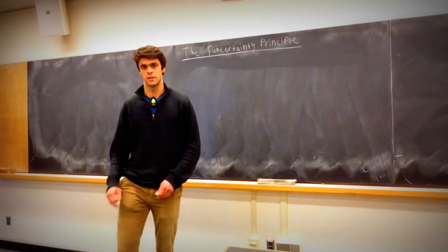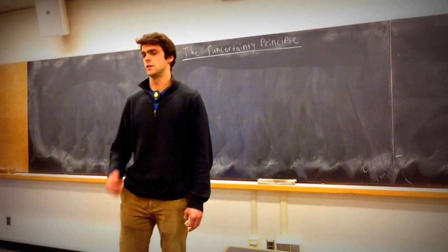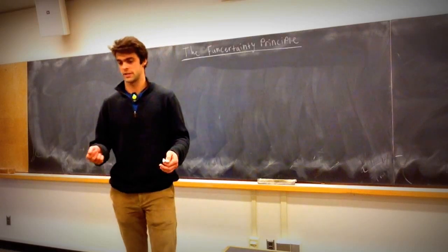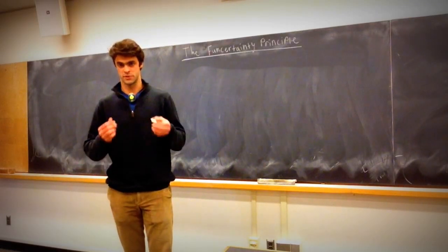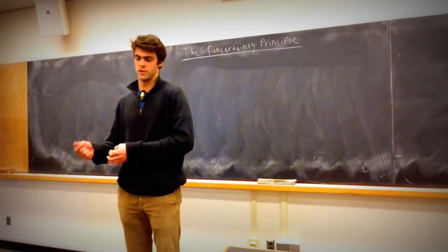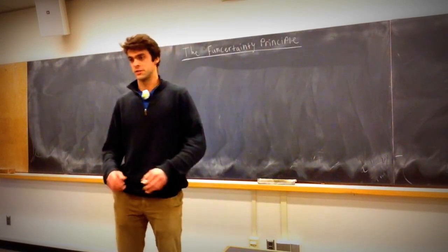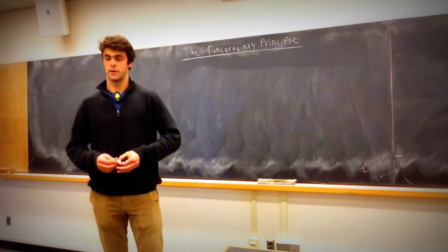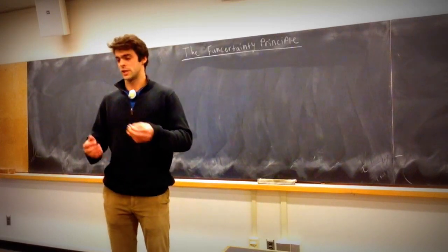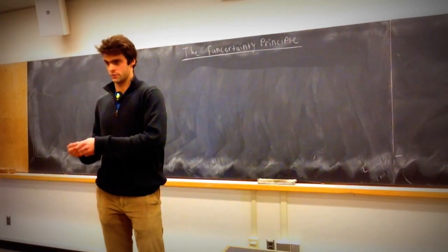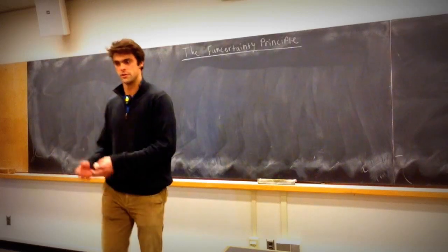Roughly speaking, the uncertainty principle is a beautiful result in physics, in quantum mechanics, which essentially says that you cannot arbitrarily well-localize the position and the momentum of a particle at a given point in time. As this is a math talk, we'll actually be proving something about a function and its Fourier transform, but this result is actually equivalent to the physics result, and we'll be touching upon how you can interpret the result in a physics setting.